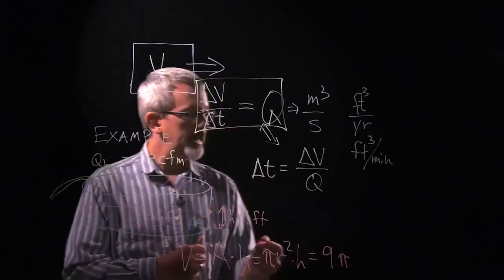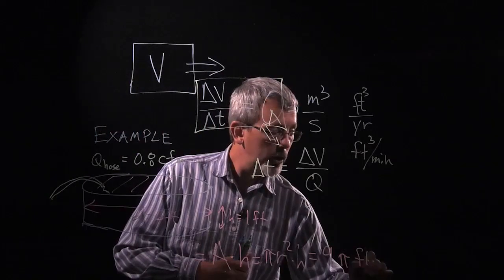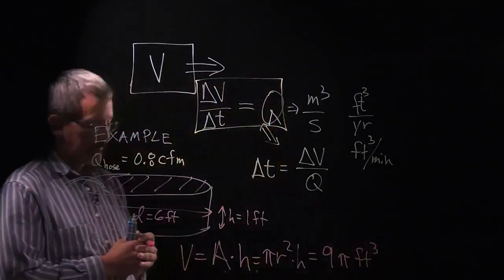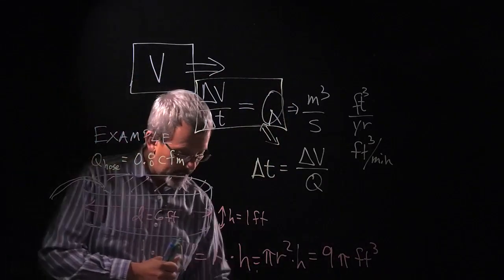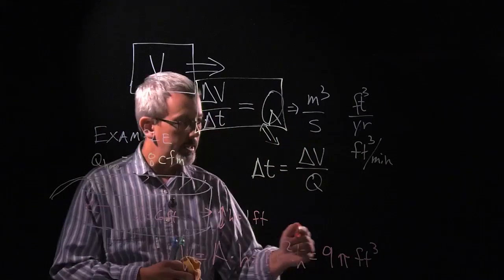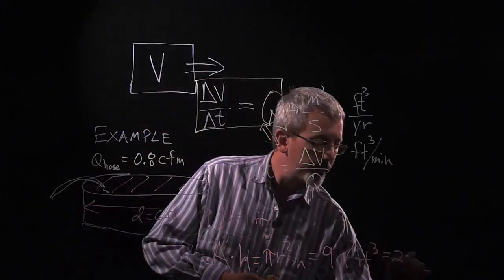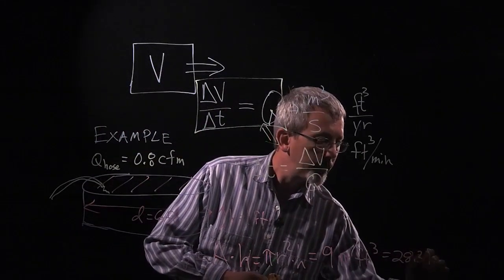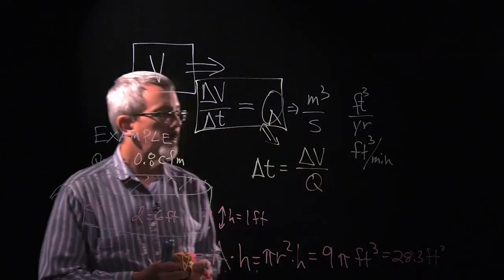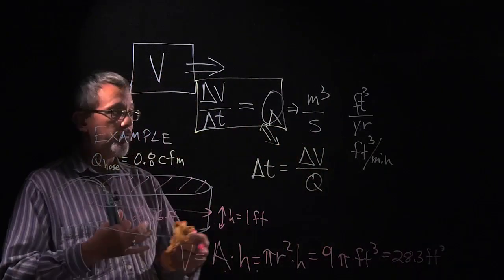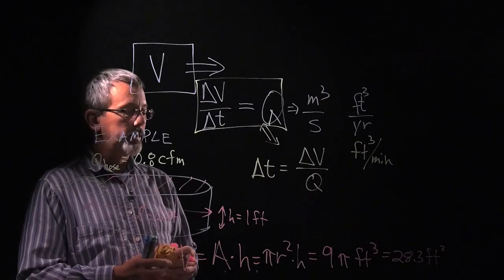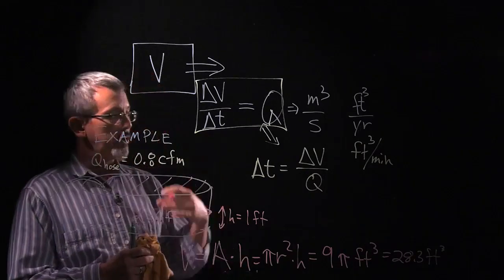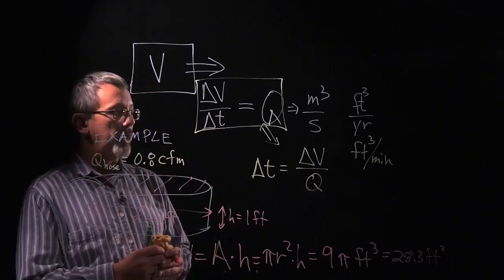So that's 3 times 3 times 1, 9 pi cubic feet. And then if I multiply by pi, I believe the number I get is 28.3. So there's the volume of the pool, the amount of water I want to put in there. And I want to go from 0 to that 28, so that would be the change in my volume.